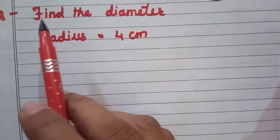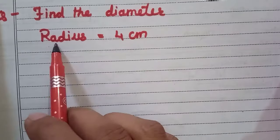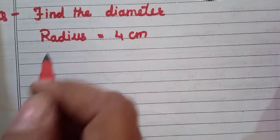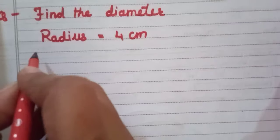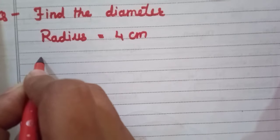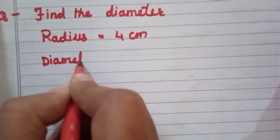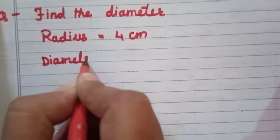Okay, this is your next point: find the diameter and radius is given. Have you remembered the formula to find the diameter? Yes, our formula is diameter equals 2 multiply by radius.